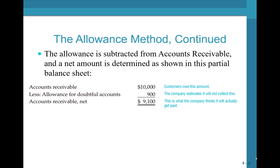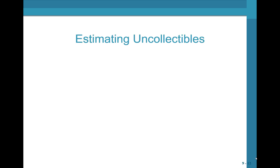In this example, we have accounts receivable of $10,000 — that's what customers owe. We subtract the allowance for doubtful accounts, which is the amount we expect not to collect. This leaves us with net AR of $9,100, and this is what we expect to get paid.